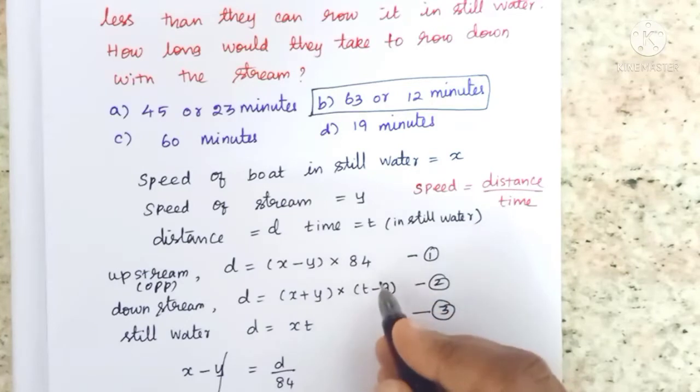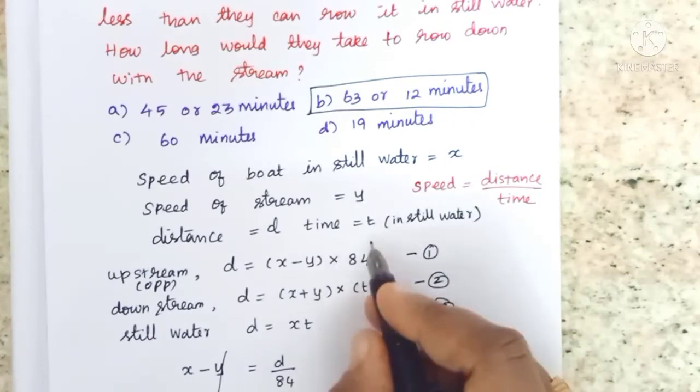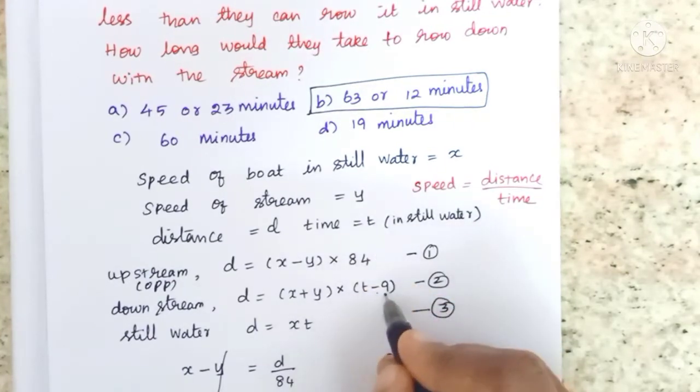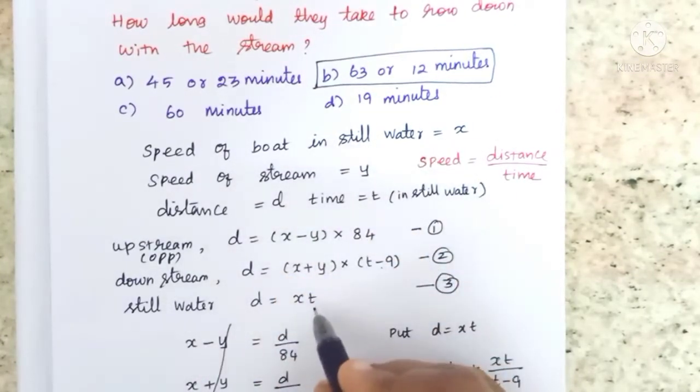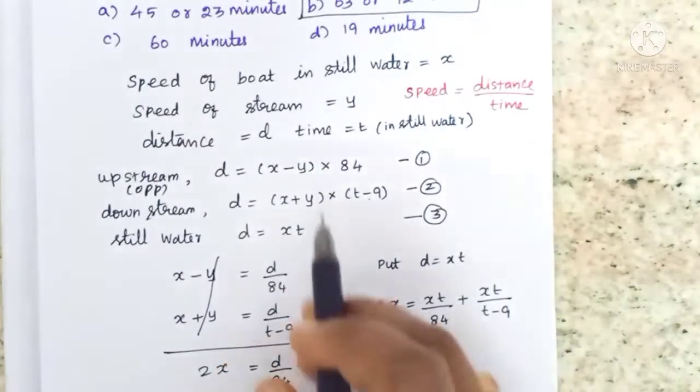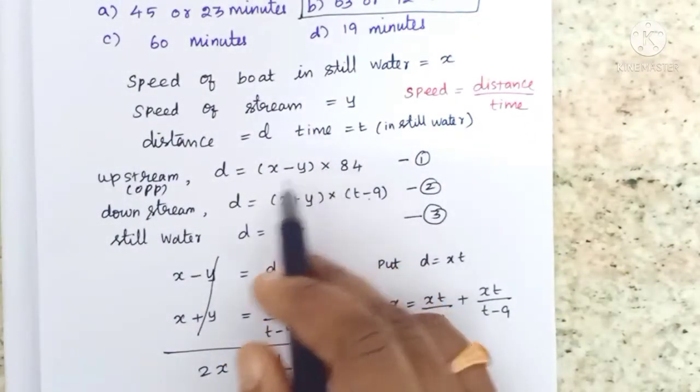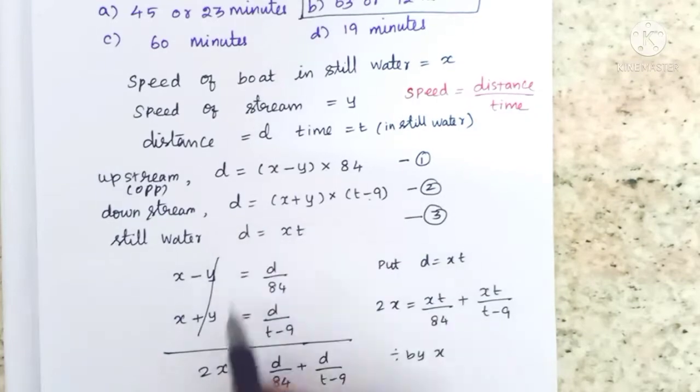The time is less than the still water time by 9 minutes. In this case, distance equals speed of boat x into time t. So we have three equations: 84, t minus 9, and still water time t.